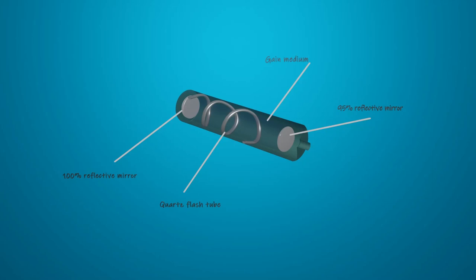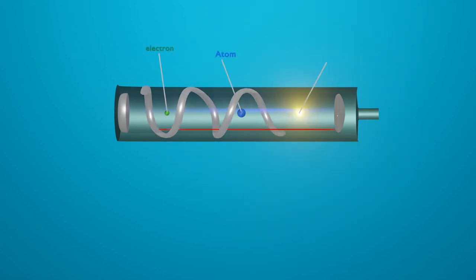First, an electric current will make the flash lamp turn on and off, which will excite the electrons in the medium. These excited electrons in their heightened state then return to their ground state and give off a photon of light by the process of spontaneous emission.